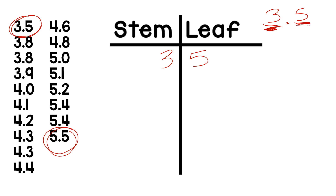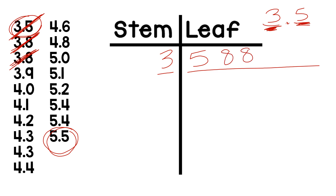Every number that has a three in the ones place is going to be in this row with the five. I have three and five tenths — already on the plot. I see three and eight tenths twice, so the eight goes in the leaf twice. Then three and nine tenths. All numbers in this row have a three in the stem and the leaf represents the tenths place.